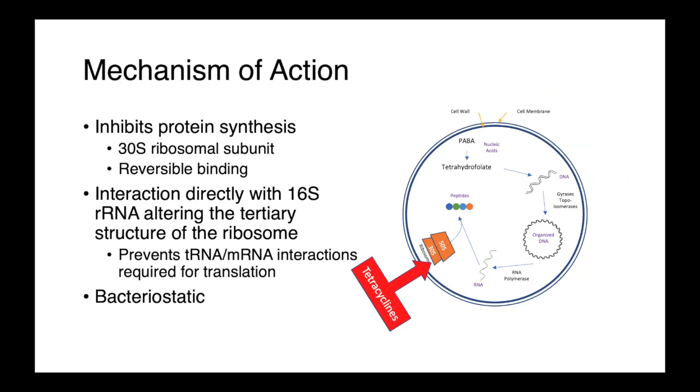Specifically within the 30S ribosomal subunit, the tetracyclines interact with the 16S ribosomal RNA, and in doing so, they alter the tertiary structure of the ribosome. As a consequence of this altered tertiary structure, tRNA-mRNA interactions are prevented, and translation is arrested. So those mRNA molecules that are being transcribed from the genome are unable to be translated into protein.